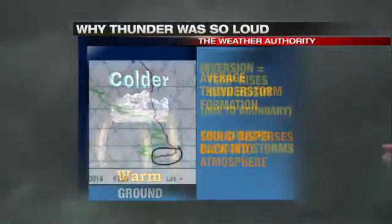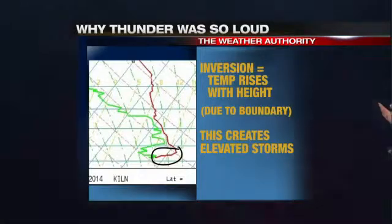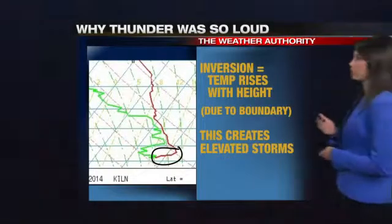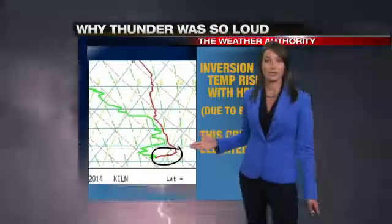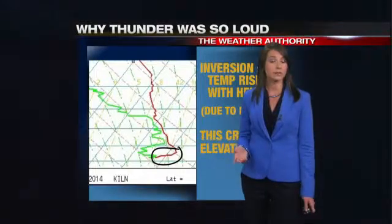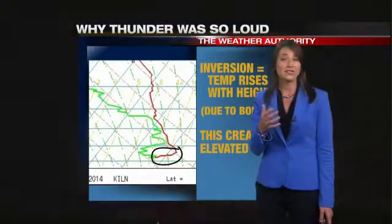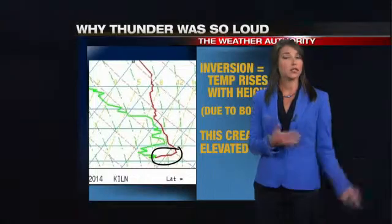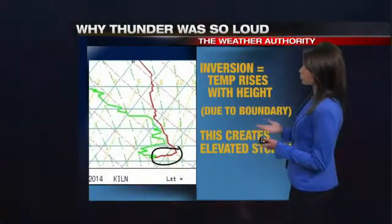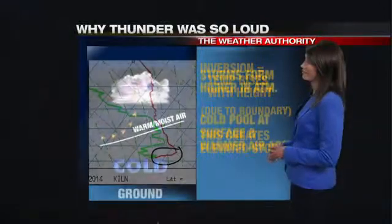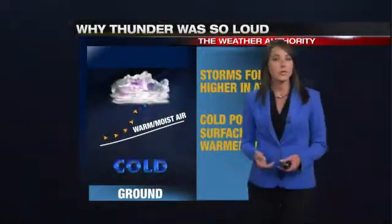What we had the other night was called an inversion. It's actually kind of the opposite of what we usually see — it's when the temperature rises as it goes higher in the atmosphere. So you actually have warmer air thousands of feet above the surface, which we usually don't have. That's what's called an inversion, and that creates what's called elevated storms, so the storms just form higher in the atmosphere.